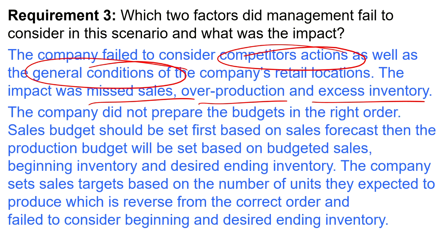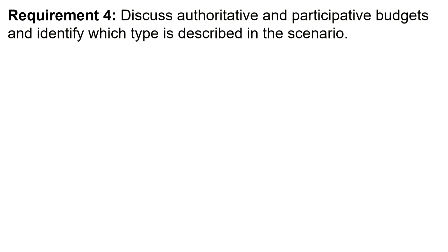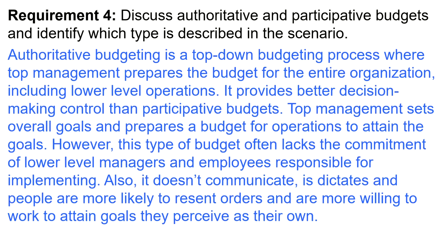The fourth requirement: discuss authoritative and participative budgets and identify which type is described in this scenario. Authoritative budgeting is a top-down budgeting process where top management prepares the budget for the entire organization, including lower-level operations. It provides better decision-making control than participative budgets — top management sets overall goals and prepares a budget for operations to attain those goals. However, this type of budget often lacks the commitment of lower-level managers and employees responsible for implementing. It doesn't communicate — it dictates — and people are more likely to resent orders and are more willing to work toward goals they perceive as their own.